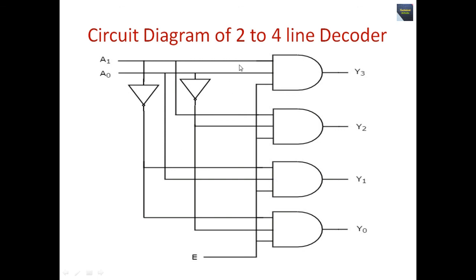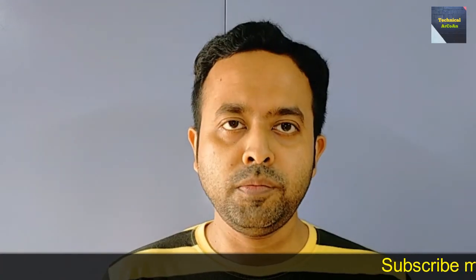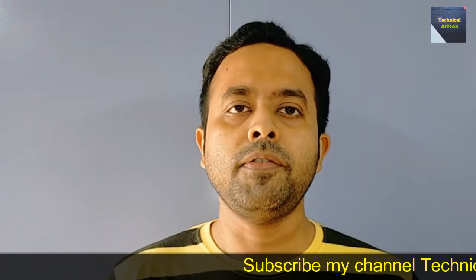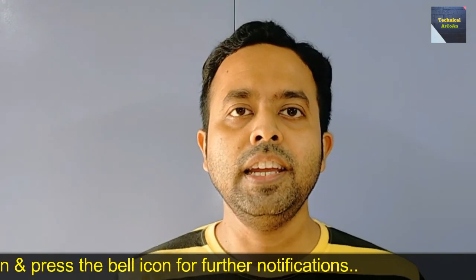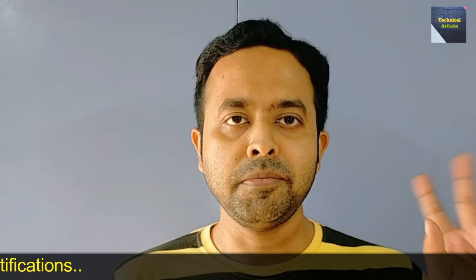This is the circuit diagram where we use AND gates and NOT gates to build the 2-to-4 line decoder. The circuit is enabled when E is 1. If the enable is 0, all outputs of the decoder will be 0, meaning the circuit will no longer work. I hope you understood today's topic. For more videos, keep watching my channel Technical Archway. Thank you and bye bye.